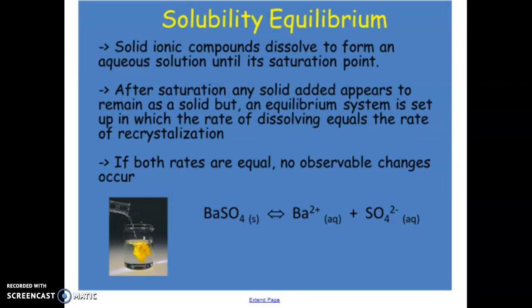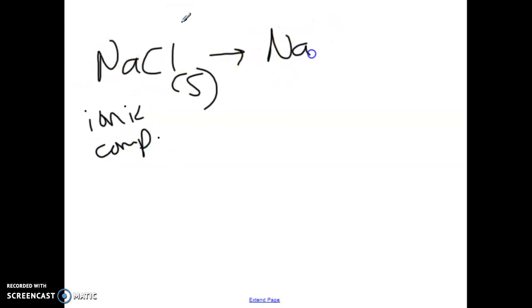Taking a look at the first one, we have solubility equilibrium. So solubility is essentially looking at taking a solute and dissolving it into a solvent. Just to recap on a couple of terms from grade 11 that you should remember. When we have an ionic compound and we place this in water, the process that occurs when this happens is called dissociation.